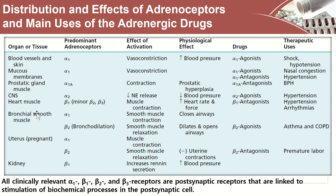Where are these receptors located? All clinically relevant alpha-1, alpha-2, beta-1, beta-2, and beta-3 receptors are postsynaptic receptors — that should mean something from the previous lecture — linked to stimulation of biochemical processes in the postsynaptic cells. These biochemical processes lead to all of the effects seen in the table.